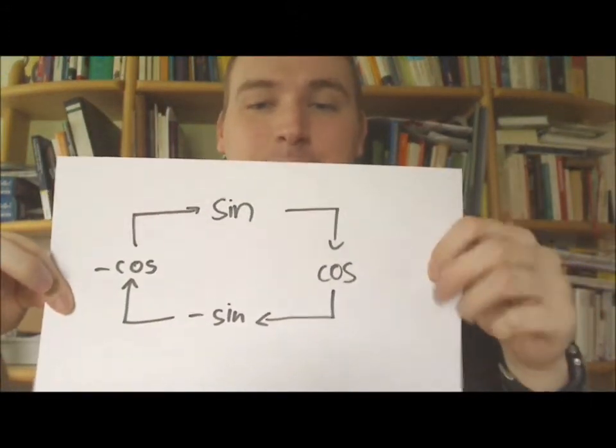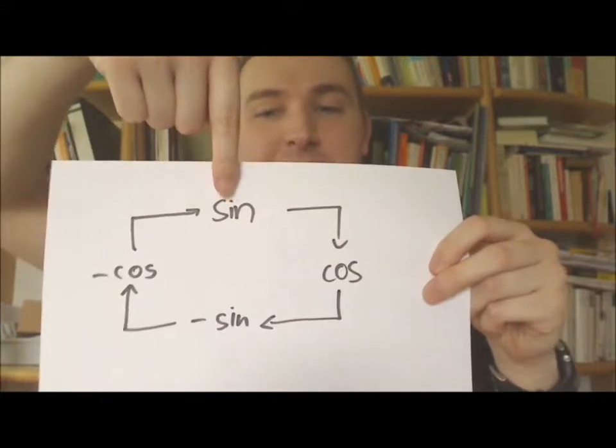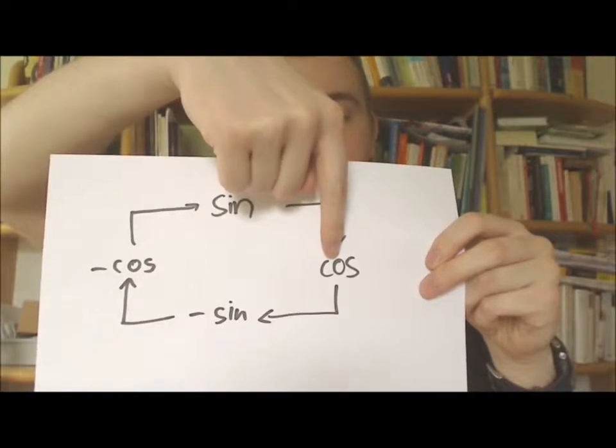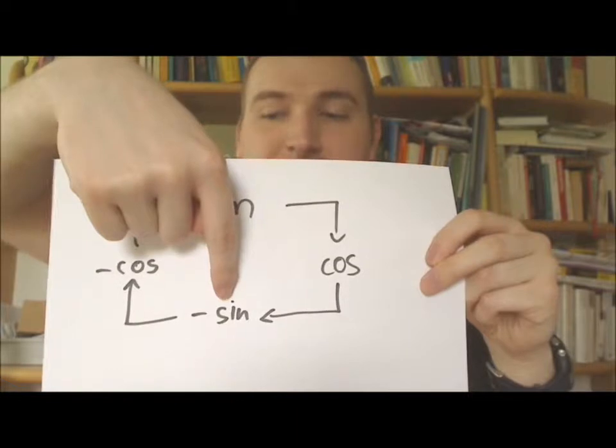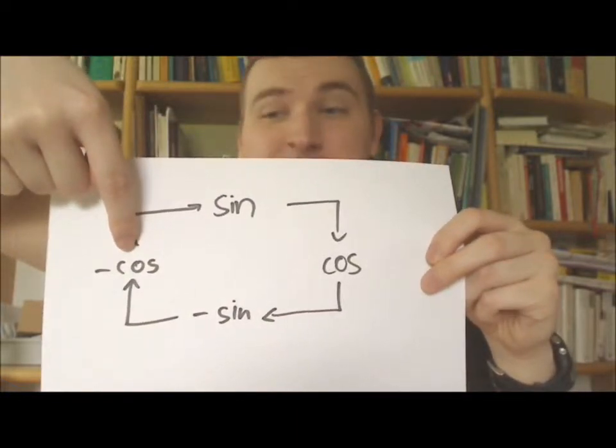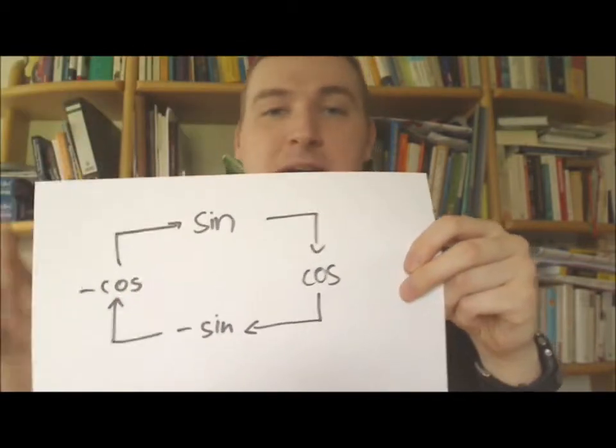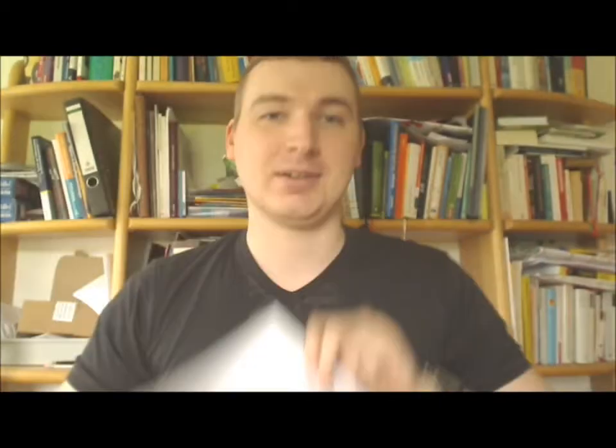you just have sine, when you want to make a derivation of sine then you have cosine and when you have cosine and you make it a derivation then you have minus sine and when you do the derivation of minus sine then you have minus cosine and when you do the derivation of minus cosine you will receive again sine. So it's a square,